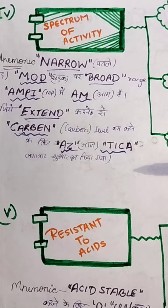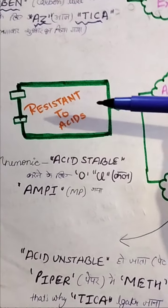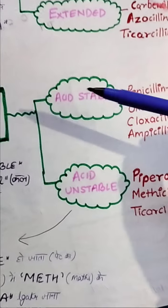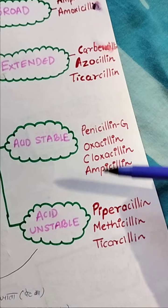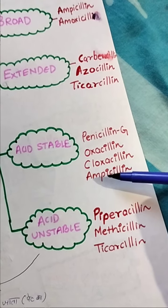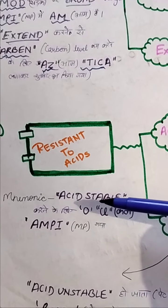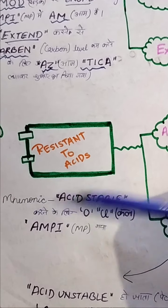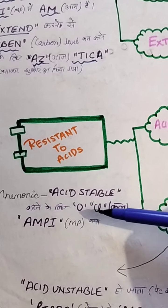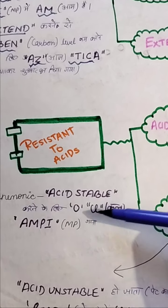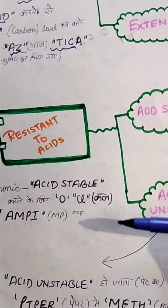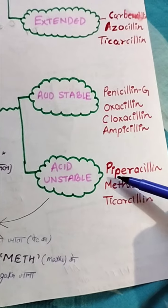The last category is resistance to acid, divided into acid stable and acid unstable. Acid stable includes penicillin V, oxacillin, cloxacillin, and ampicillin. To remember acid stable drugs, use the phrase 'kal ampi gaya' — meaning oxacillin, cloxacillin, ampicillin, and penicillin V are stable in acid.